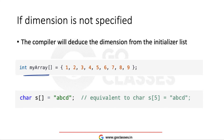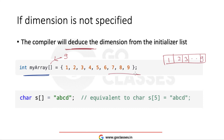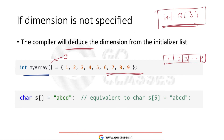Now let's see: if I have an array and the dimension is not specified, what dimension will the compiler take? If the dimension is not specified, the compiler will deduce the dimension from the initializer list. For example, if you supply 9 integers, the compiler will take the array size as 9. You cannot declare an array without a specified dimension and without an initializer — that will give an error. But if you initialize it, the compiler can deduce the dimension.